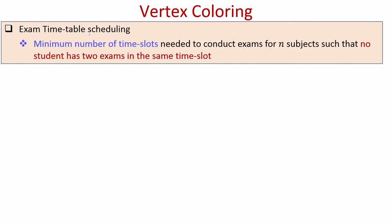The problem is that of exam timetable scheduling. Imagine there is a college with n subjects, multiple students taking those subjects, and we need to schedule the exams for those n subjects. We need to schedule the exams such that it does not happen that a student has two exams in the same time slot. For instance, if a student has taken subject 1 as well as subject 2, it should not happen that subject 1 and subject 2 exams are scheduled on the same day and the same time slot.